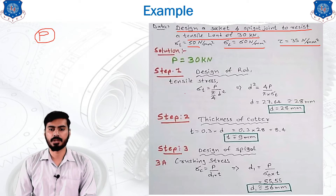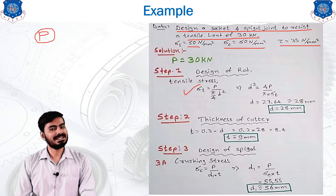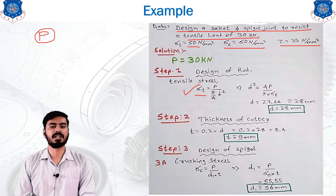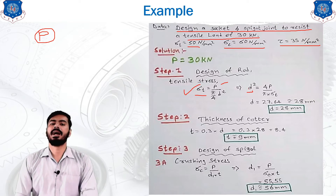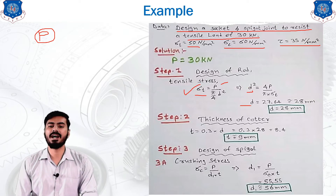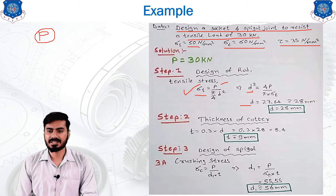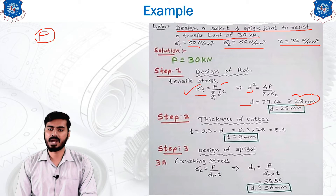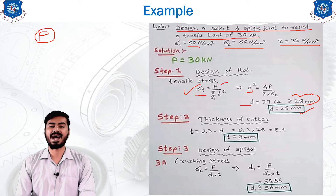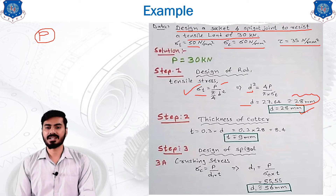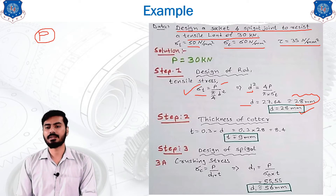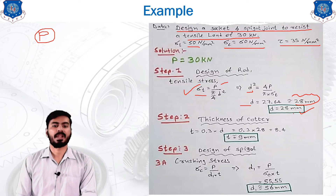In this equation we have the value of σt and P, so the only unknown remaining is d. Calculating gives d = 27.64 mm, which can be rounded to 28 mm. Therefore, the final answer for the diameter of the rod is d = 28 mm.